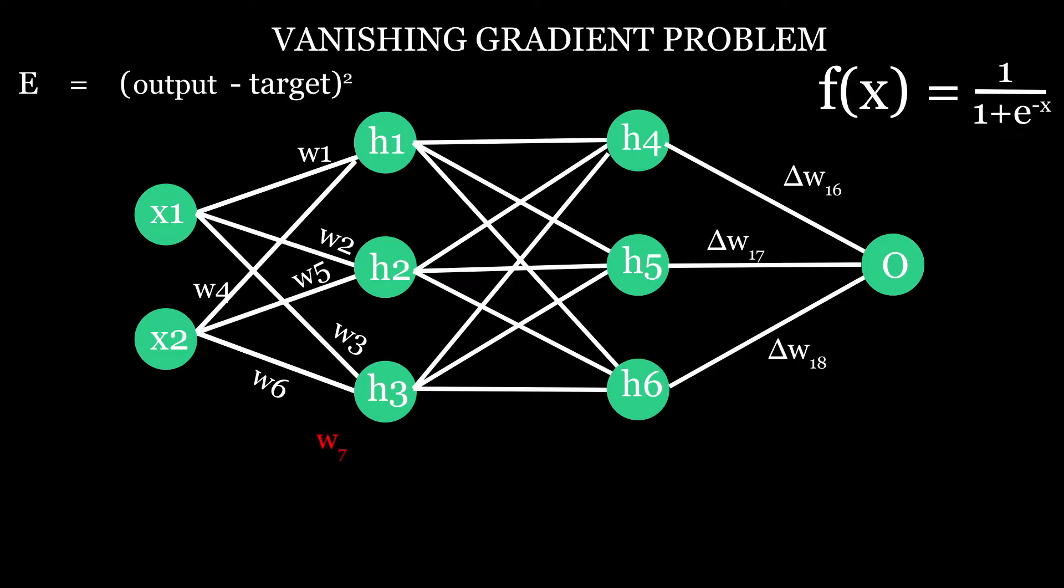So to do this, first we need to measure how much error has changed due to w7. Let's call it w7. And to get this, we have to measure how much error changed due to output from h4 times how much output at h4 changed due to input at h4 times how much input at h4 changed due to w7.